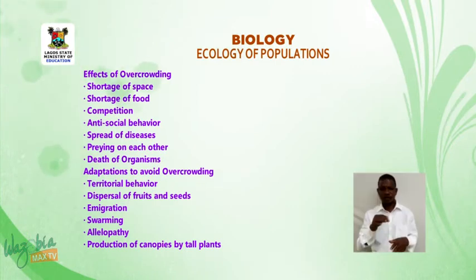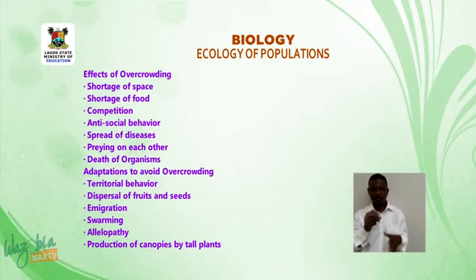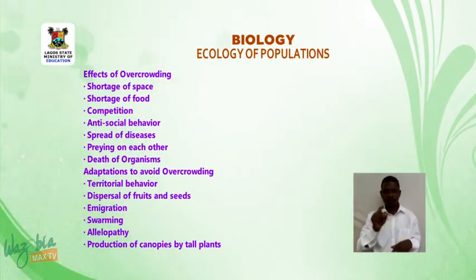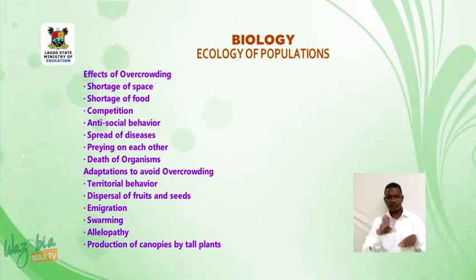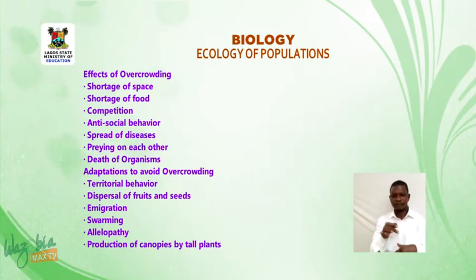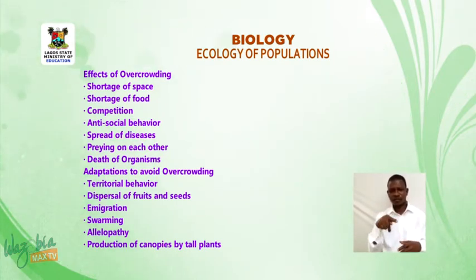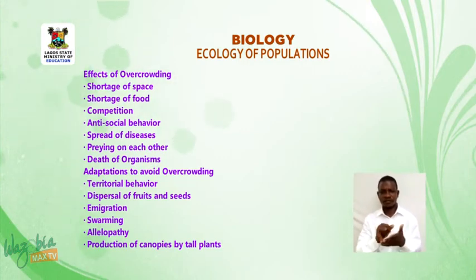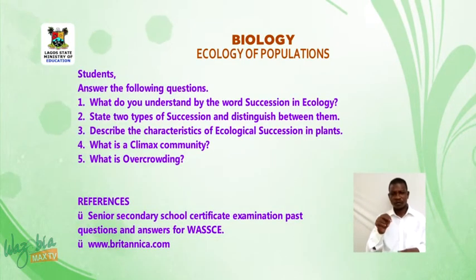Effects of overcrowding include: shortage of space, shortage of food, competition, antisocial behaviour, spread of diseases, and preying on each other, leading to death of organisms. Adaptations to avoid overcrowding include: territorial behaviour, dispersal of fruits and seeds, emigration, swarming, allelopathy, and the production of canopies by tall plants.